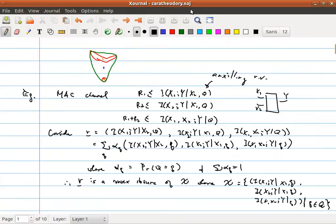Let's go for an example here. Let's consider the MAC channel, or the multiple access channel. Basically we have two terminals, x1 and x2, and we want to send information from each terminal to a joint decoder Y. The rate region of a MAC channel can be given by R1 less than I(X1;Y|X2,Q), R2 less than I(X2;Y|X1,Q), and the sum rate will be less than I(X1,X2;Y|Q).